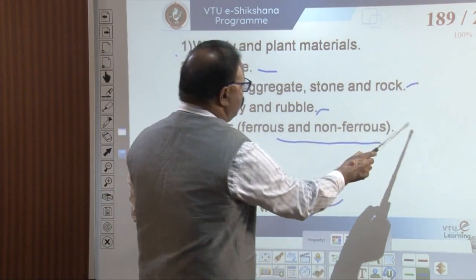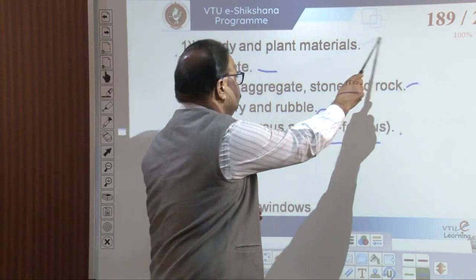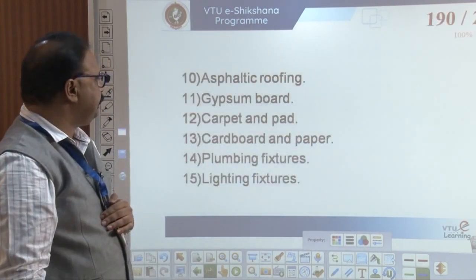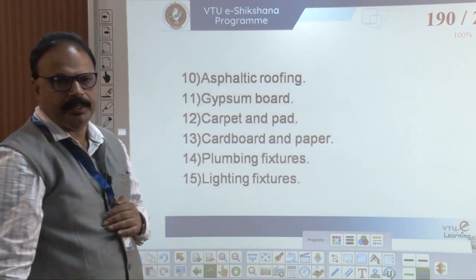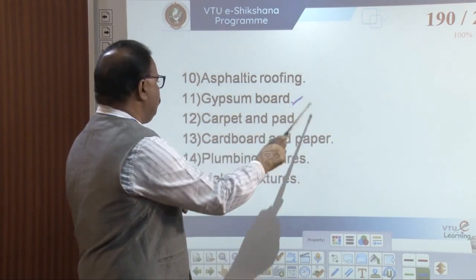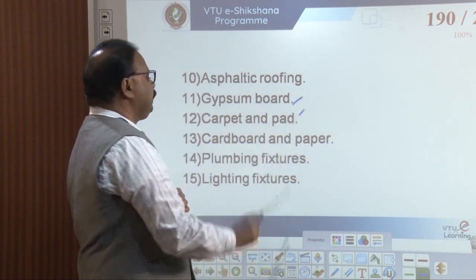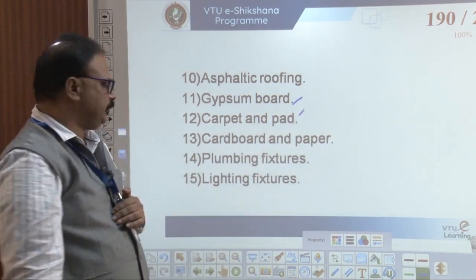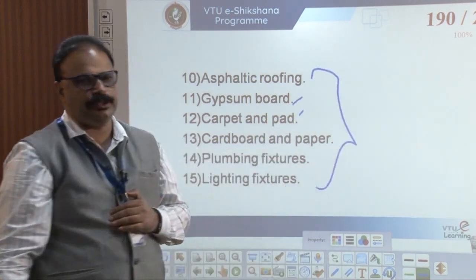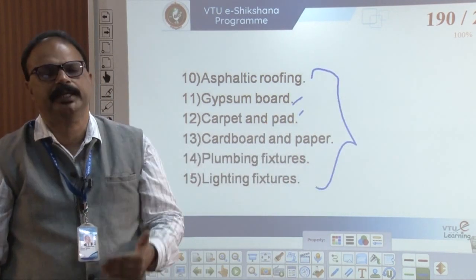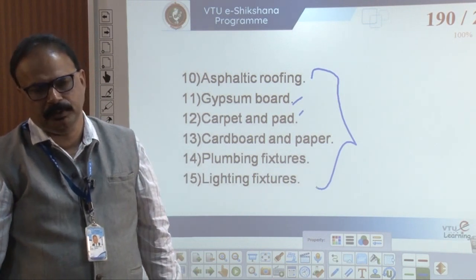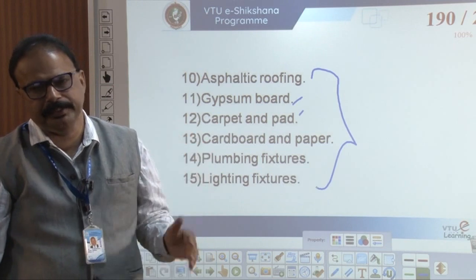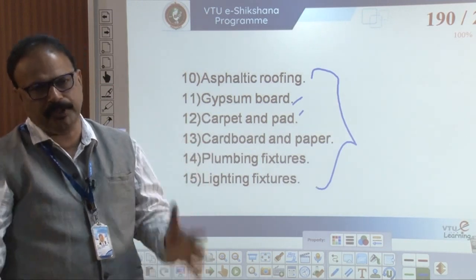Construction waste sources include wood, plastic, glass, woody and plank materials, asphalt roofing, gypsum board, carpet and pad, cardboard, paper, plumbing fixtures, lighting fixtures. These are the construction waste sources from demolition or construction or renovation — at that time we will get the different types of waste.